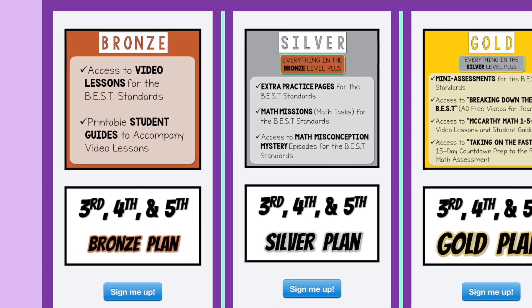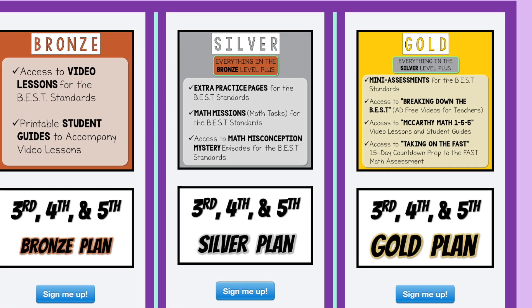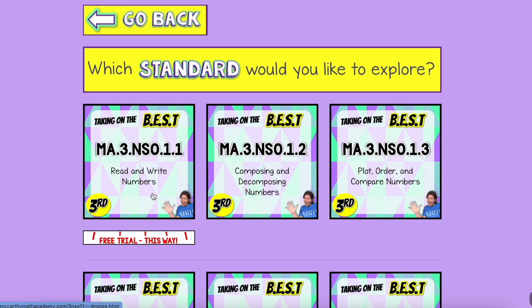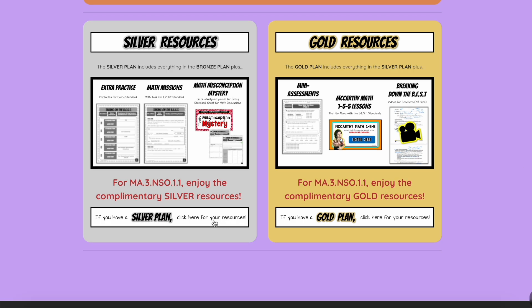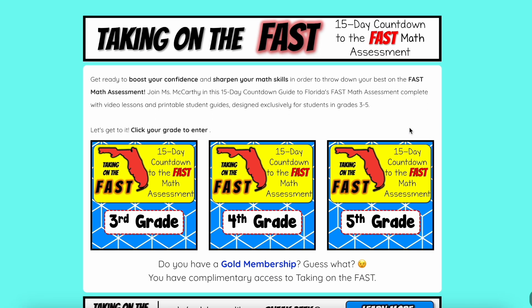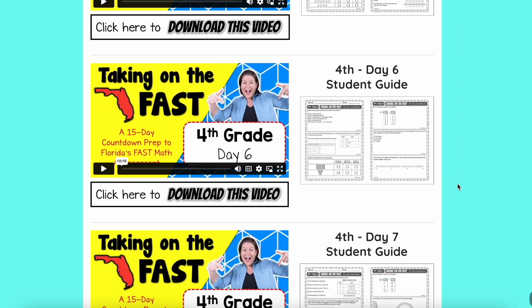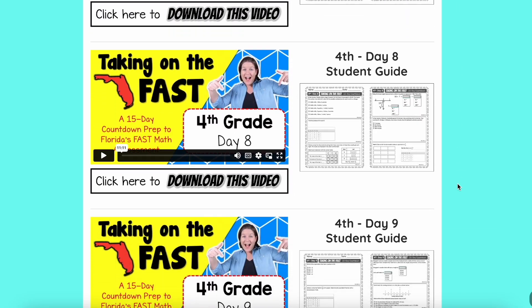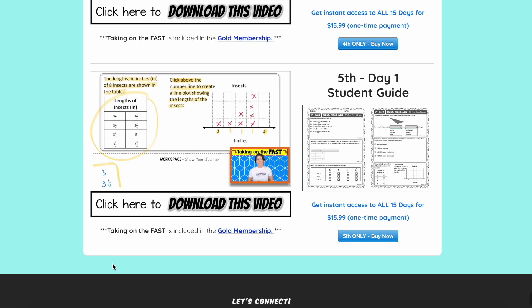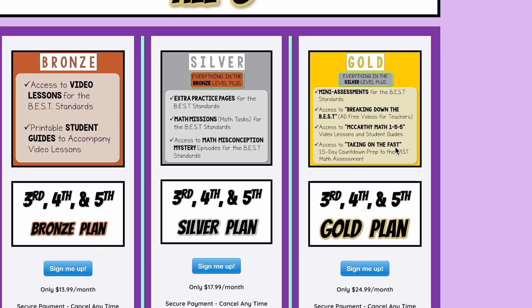With three levels, bronze, silver, and gold, you can choose the support that best fits your needs to promote student growth and skill mastery. Would you like to take Taking on the Best for a test drive? You can sample one standard per grade to find the right plan for you. Do that by simply requesting a free trial. And if you're gearing up for the final fast math assessment of the school year, definitely check out Taking on the Fast, a 15-day countdown series with video lessons and fast style math problems. Start with a sneak peek of day one, and when you're ready, you can make a one-time purchase. And if you're thinking about the gold plan for Taking on the Best, good news! Taking on the Fast is included in your membership.